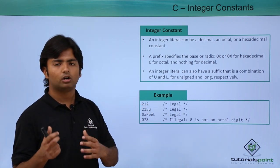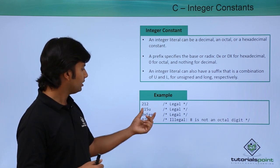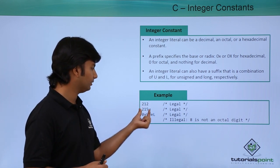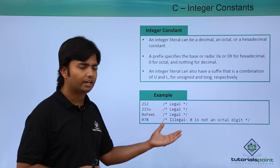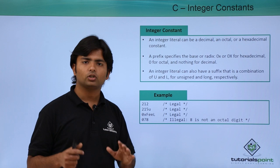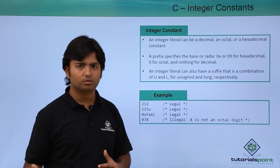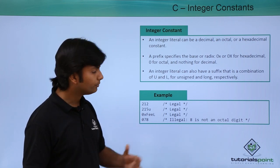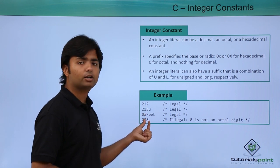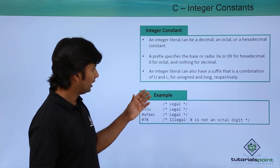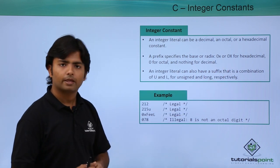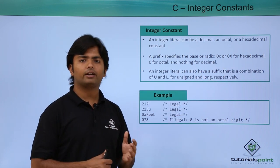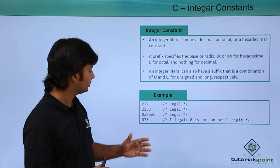You can write them like this, like 215U. This is also a valid value. Similarly, in case you want to write any hexadecimal code or hexadecimal value, you can start that by 0x, as 0x suffix is for the hexadecimal.